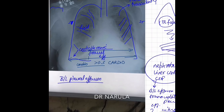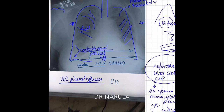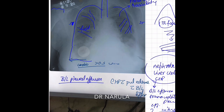So the diagnosis is congestive heart failure with pulmonary edema and bilateral pleural effusions. Looking at which side the effusion is more prominent — it appears equal on both sides, so we write: bilateral pleural effusion, right equal to left. This is the diagnosis of this X-ray.